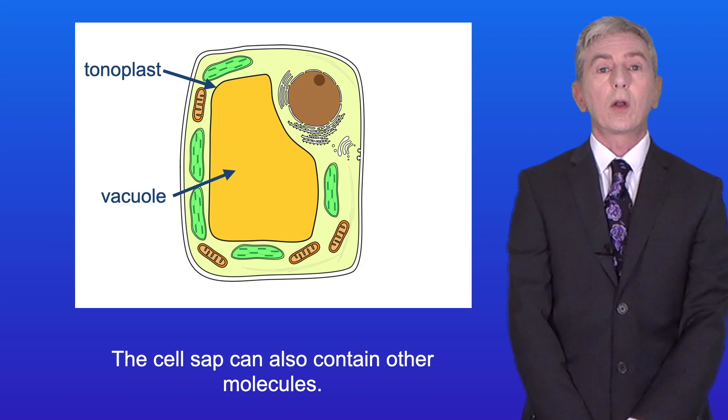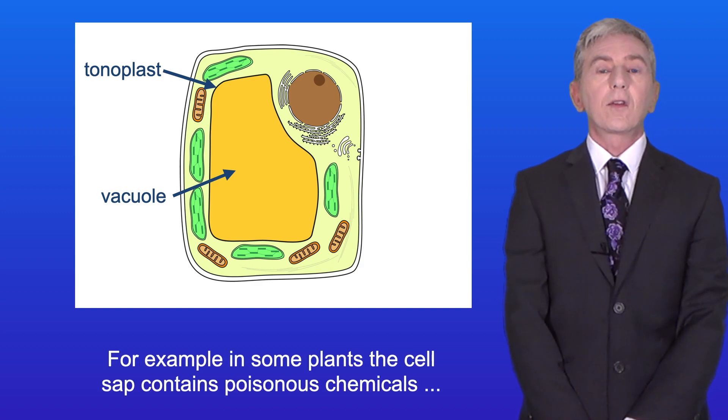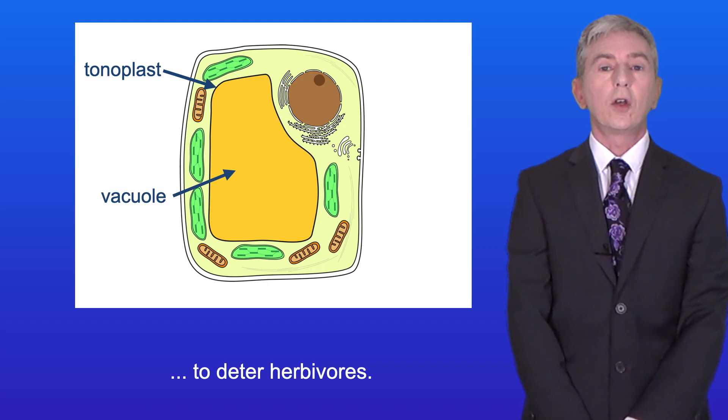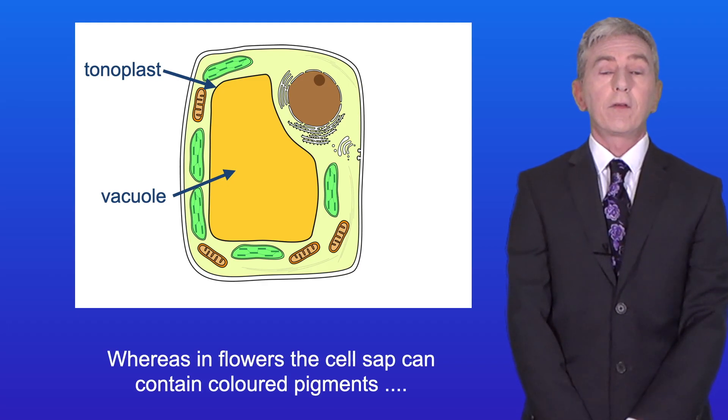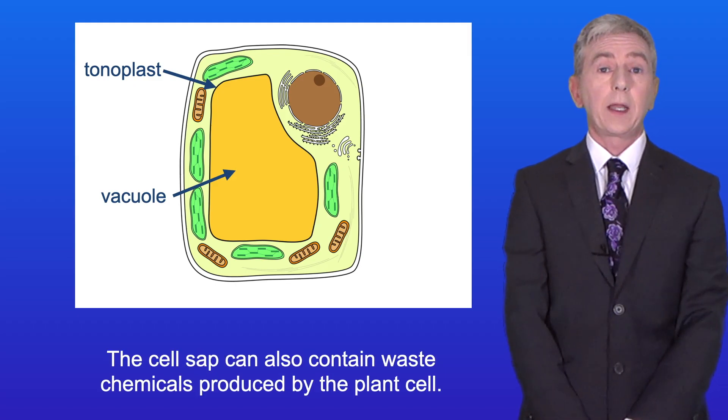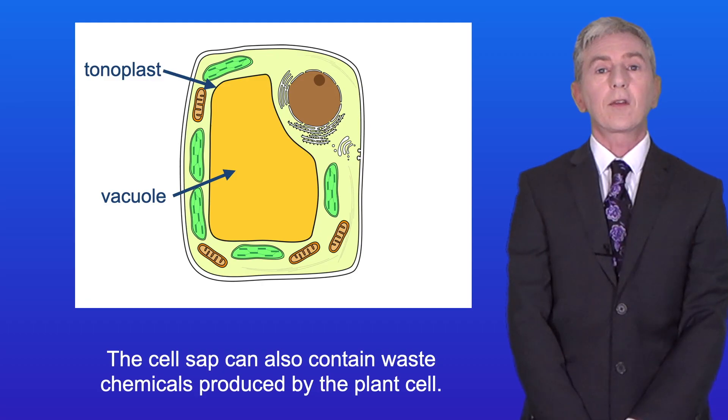The cell sap can also contain other molecules. For example in some plants the cell sap contains poisonous chemicals to deter herbivores. Whereas in flowers the cell sap can contain coloured pigments to attract pollinators. The cell sap can also contain waste chemicals produced by the plant cell.